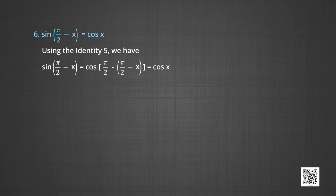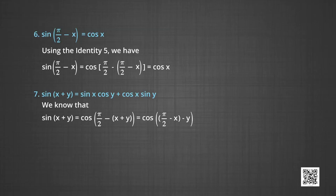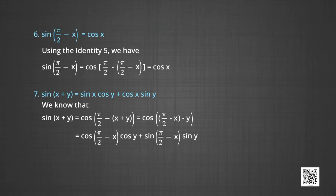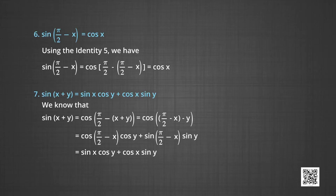Now let us find the identity for sin(x+y). We know that sin(x+y) = cos(π/2 - (x+y)) = cos((π/2 - x) - y). Applying the identity for cos(x-y), this gives cos(π/2 - x)cos y + sin(π/2 - x)sin y. Replacing cos(π/2 - x) by sin x and sin(π/2 - x) by cos x, we get sin(x+y) = sin x cos y + cos x sin y.